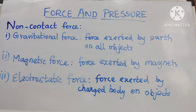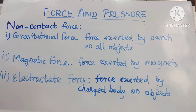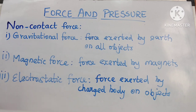Next, electrostatic force: a force exerted by a charged body on another charged or uncharged body. For example, run a plastic comb through clean, dry hair repeatedly, then bring that comb near bits of paper. The paper is attracted towards the comb because of electrostatic force, which acts on objects at a distance.